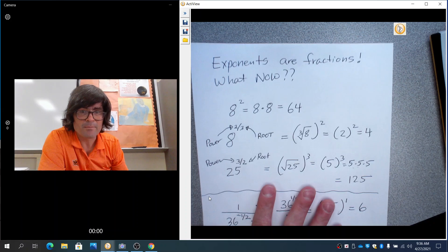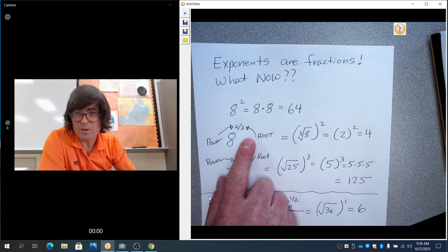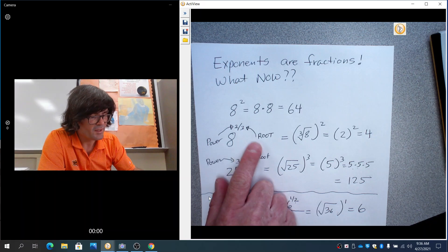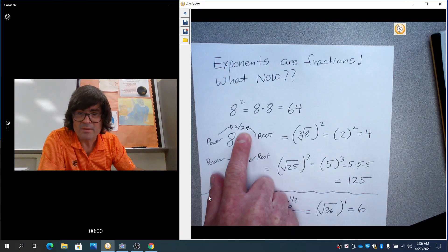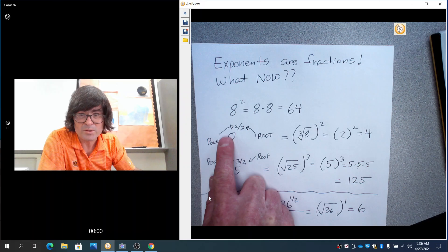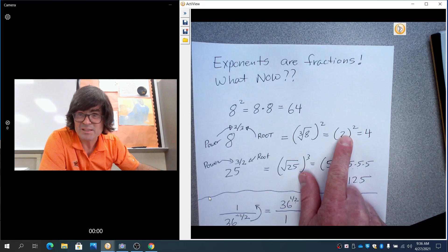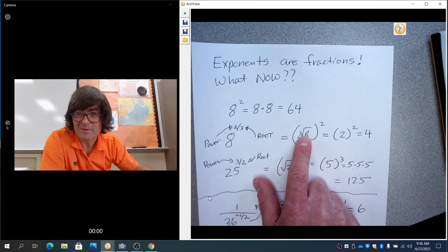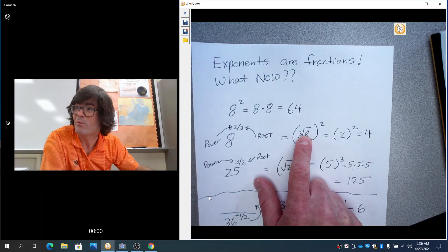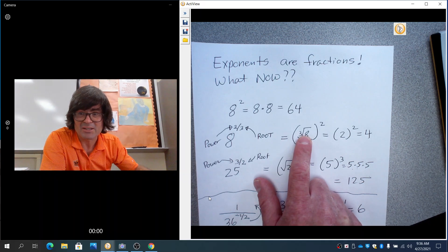So just to recap, if the exponent's a fraction, no big deal. The bottom number is the root. The top number is the power. It doesn't matter which order you do them in, but I strongly recommend you do the root first, because that takes you from an 8 down to a 2. That's better. If you had tried to square first, you would have gone from an 8 to a 64, and that's just going to make things harder.